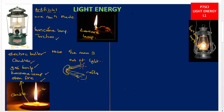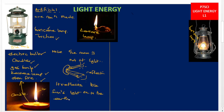Therefore, the moon is not a source of light — neither a natural source nor an artificial source — simply because it reflects the sun's light onto the earth. If asked why the moon is not regarded as a source of light, it is simply because it reflects the sun's light onto the earth.